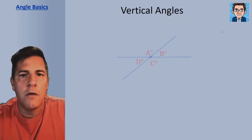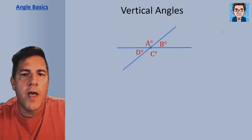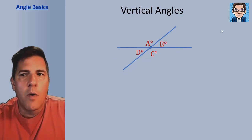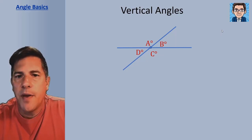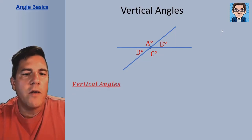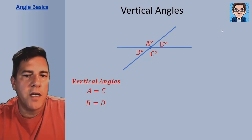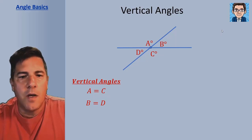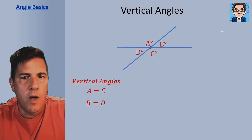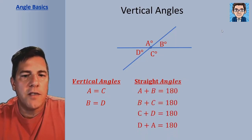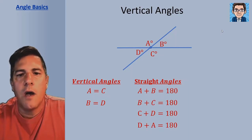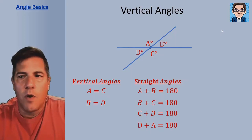Vertical angles are formed when you have two intersecting lines. The angles that are across from each other are what we consider vertical angles. So here A and C are going to be vertical angles and D and B are going to be vertical angles. Vertical angles are going to be equal, so A equals C and B equals D. Notice in a diagram like this we also have straight angle pairs: A and B, B and C, C and D, and D and A — all those pairs make straight lines and add up to 180 as well.